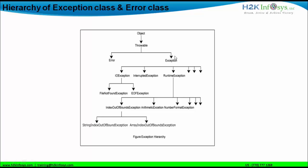If we look at this particular hierarchy, exception and error are both at the same level. They are both inheriting the properties of the throwable class. So if a Java code has an exception or an error, both can be handled by the throwable class, because the hierarchy of the throwable class is one step higher than the hierarchy of error and exceptions.